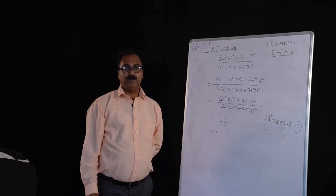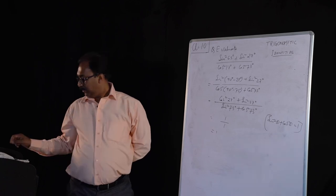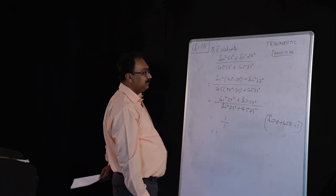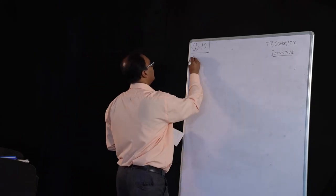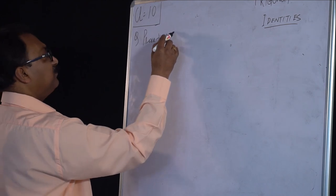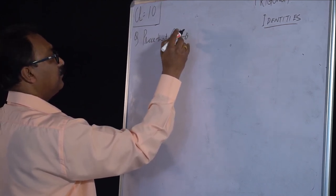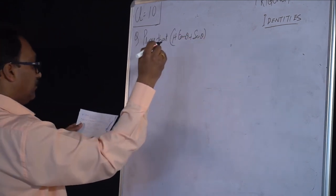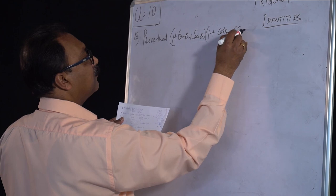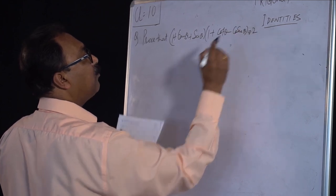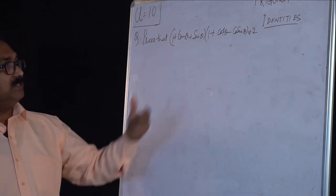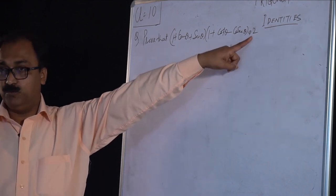Now we are going to the next questions relating Pythagorean identities — we are focusing on those today. The next question is: prove that 1 plus tan theta plus sec theta, into 1 plus cot theta minus cosec theta, is equal to 2. All the trig functions together answer only 2. How do we solve this question?